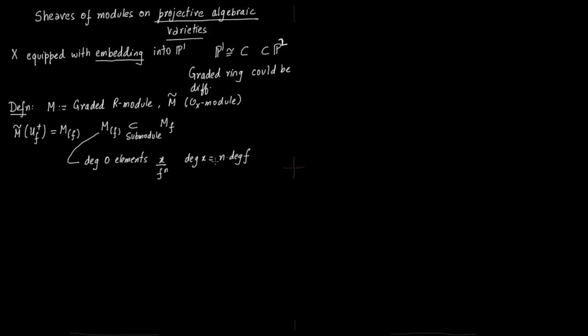So X is homogeneous. It has degree N times degree of F. So precisely like in the affine case, we are just using graded rings and we are using graded modules.